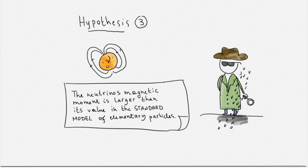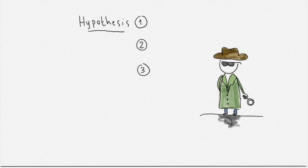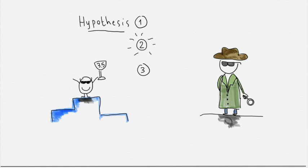Of the three explanations considered by the Xenon collaboration, the observed excess is most consistent with the solar axion signal. In statistical terms, the solar axion hypothesis has a significance of 3.5 sigma, meaning that there is about a 2 over 10,000 chance that the observed excess is due to a random fluctuation rather than a signal.